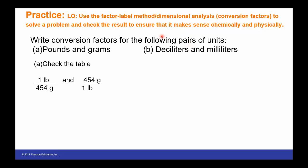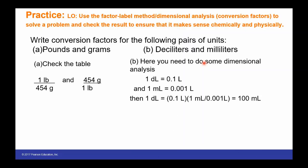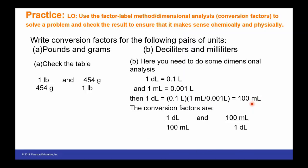What if we needed to write a conversion factor between deciliters and milliliters? I know that one deciliter is 0.1 liters and one milliliter is 0.001 liters. To find how many milliliters are in one deciliter, I take 0.1 liter and multiply it by the equality that one milliliter equals 0.001 liter. We end up with 100 milliliters. So now we know the conversion factors between deciliters and milliliters.